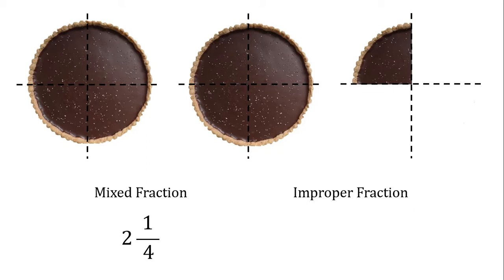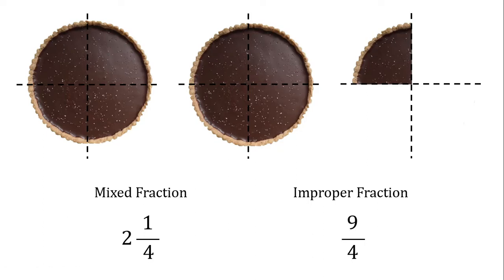For the improper fraction, we want to start with our fraction line. For the denominator, how many parts are there in a whole for a single pie? One, two, three, four. And then the question is, how many pieces are there left? Let's count them: one, two, three, four, five, six, seven, eight, nine. There are nine pieces left, so nine-fourths. Whether you write it as two and one-fourth or nine-fourths, it's actually the same thing, because I made both of these numbers based on what was in the picture.